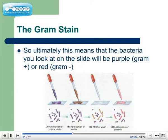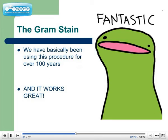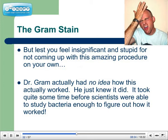Because it's kind of hard to see clear cells, the doctor recommended using a counterstain — something to color the cells that had become clear. He used Bismarck brown, but today we use safranin, which is a red dye. Ultimately, this means the bacteria you look at on a slide will be purple, which is gram-positive, or red, which is gram-negative. You can see in this picture the exact steps: first the application of crystal violet, then iodine, then an alcohol wash, and then counterstaining with safranin. We have basically been using this procedure for over 100 years, and it works great. Dr. Gram actually had no idea how this worked — he just knew that it did.